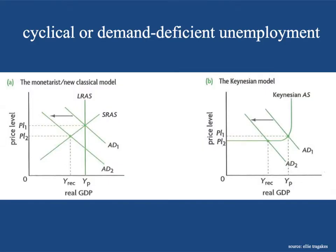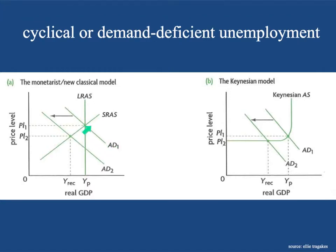First of all, taking a look at cyclical or demand-deficient unemployment, you can express it the monetarist or neoclassical way, or you could express it the Keynesian way. In the neoclassical model, you have your regular aggregate supply and aggregate demand. You have the short-run aggregate supply curve, the long-run aggregate supply curve, and your aggregate demand curve, AD1.